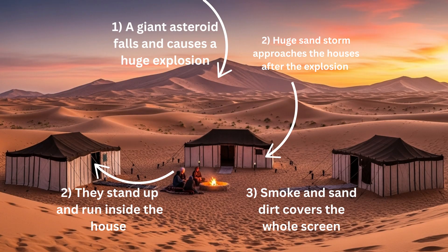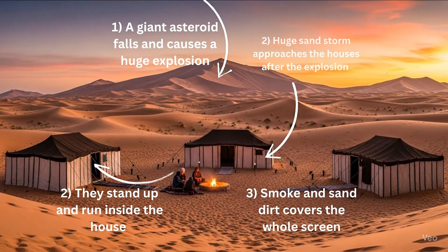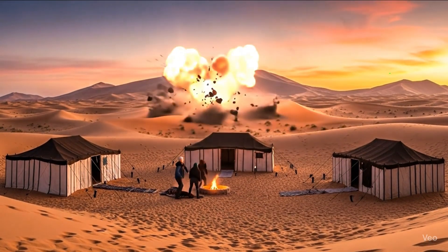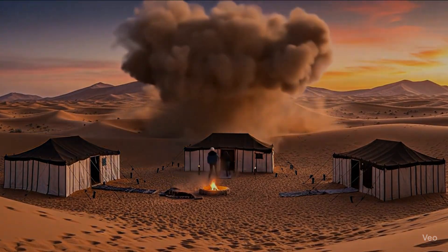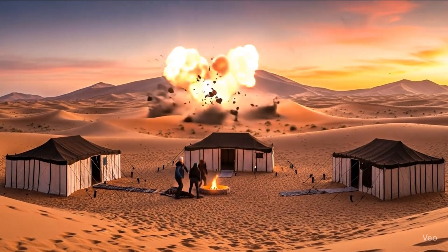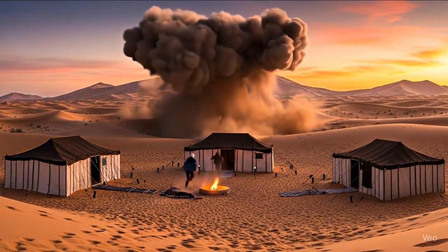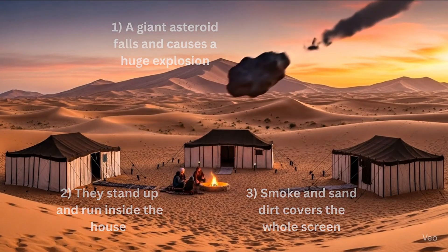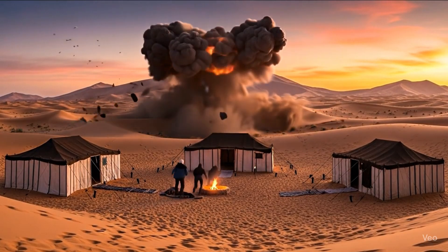Next, the desert is calm until a massive asteroid tears through the sky and explodes. People jump up in shock, scrambling to get inside the tents. A violent sandstorm rolls in, swallowing the camp right after the blast. VEO3 captured the explosion beautifully, but the people's movement was average. I added an arrow indicating they would go to the house on the left, and it didn't follow that accurately — but I'll say it's pretty good.